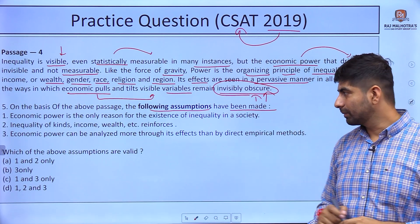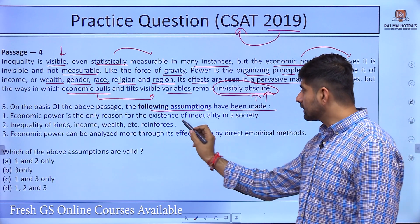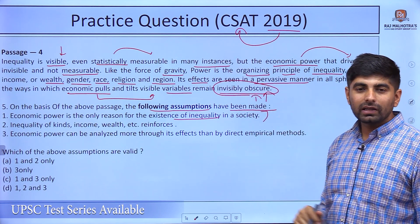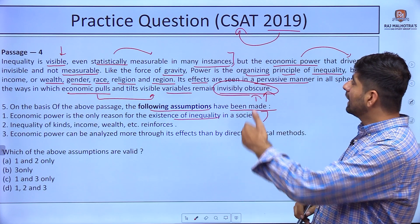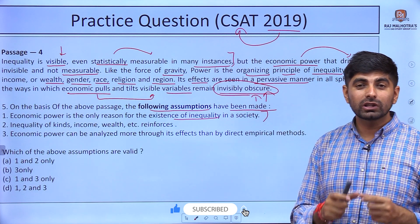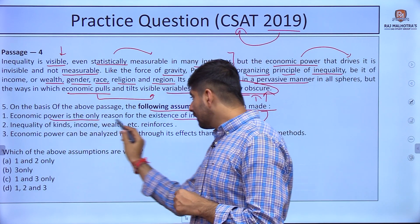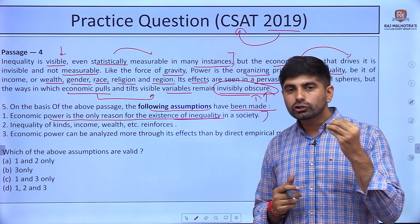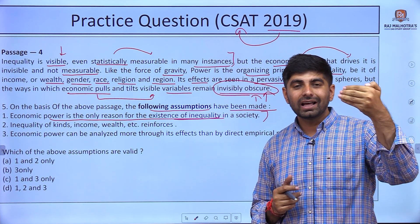First option: economic power is the only reason for the existence of inequality in a society. But in the passage it says 'in many instances' — so this won't be our answer. Plus, this defines an extreme opinion, and we cannot choose extreme opinions as they are not balanced or aligned with the approach of the author.